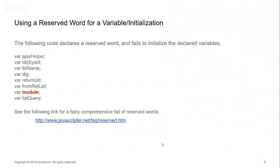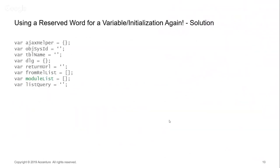Never use reserved words — there's a good reference link for all JavaScript reserved words. Don't use function names or reserved function names as variable names. Also, whoever wrote this code didn't initialize any of their variables, so we had no idea what they were. I went through and investigated all of them. I renamed 'module' to 'moduleList', which is really what it was — it turned out to be an array of module IDs.